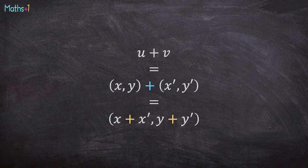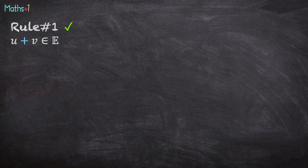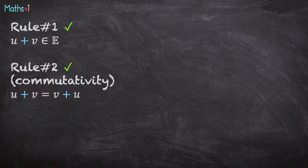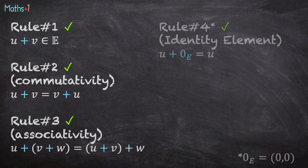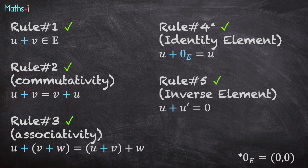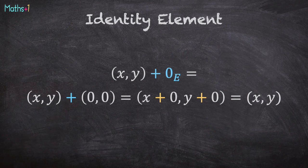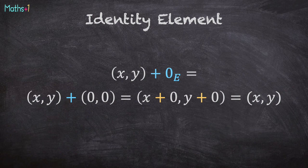The good news is that it has all the good properties. Rule number 1: u plus v is an element of E. Rule number 2: commutativity. Rule number 3: associativity. Rule number 4: identity element. Rule number 5: inverse element. Let's focus on identity element. (x, y) plus 0 is (x, y) plus (0, 0), which is (x + 0, y + 0), which is (x, y).